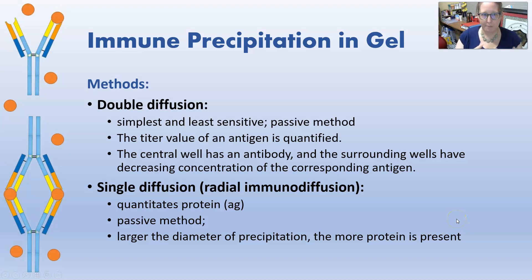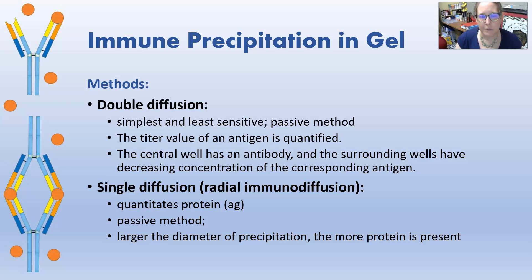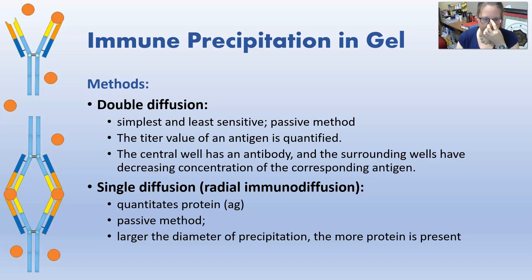The different methods for immune precipitation in gel: we have double diffusion, which is the simplest and the least sensitive. It is a passive method. You can use it to get the titer value of an antigen. The central well has an antibody and it sits in a gel, and then the surrounding wells have decreasing concentration of the corresponding antigen so that you can get your titer.